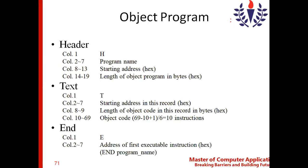If you have some 200 lines of code, with a single text record it is not possible to accommodate all the object code. That is the reason we have multiple text records. Each text record specifies the starting address in that record and the length of the object code in that particular record, followed by the object code itself.